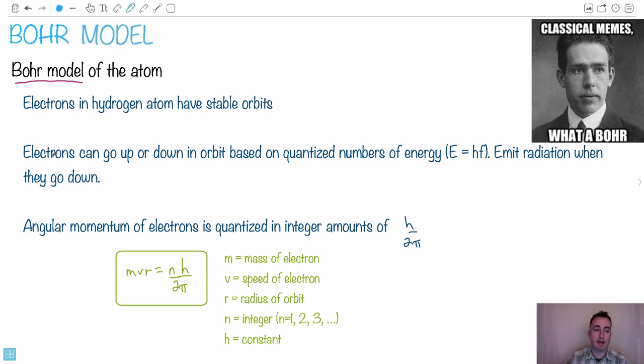Next thing, this whole thing we've been talking about before, that the electrons can go up or down in orbit based on these quantized numbers of energy. So this could be E equals HF. And of course, they emit radiation when they go down. This is this whole idea about these energy levels when they go up, when they go down, and they emit a photon.